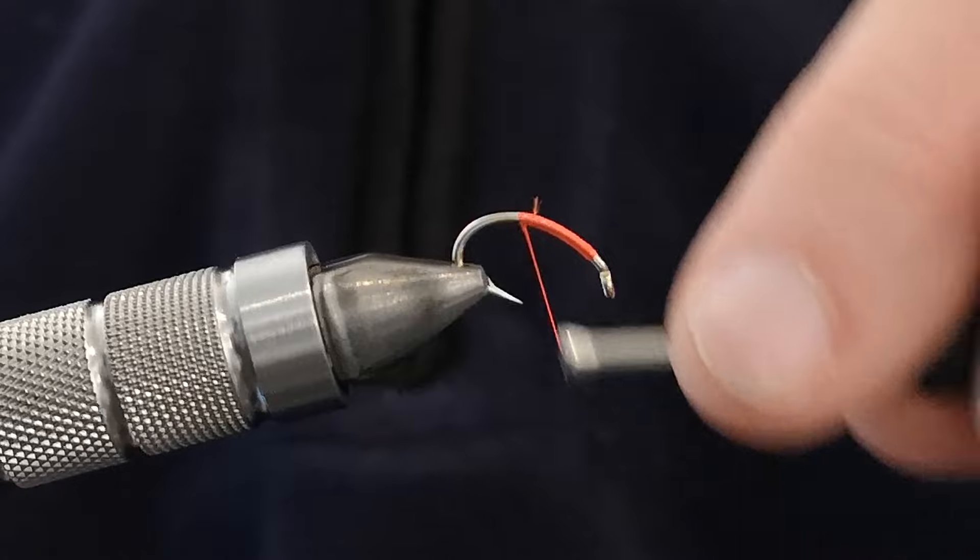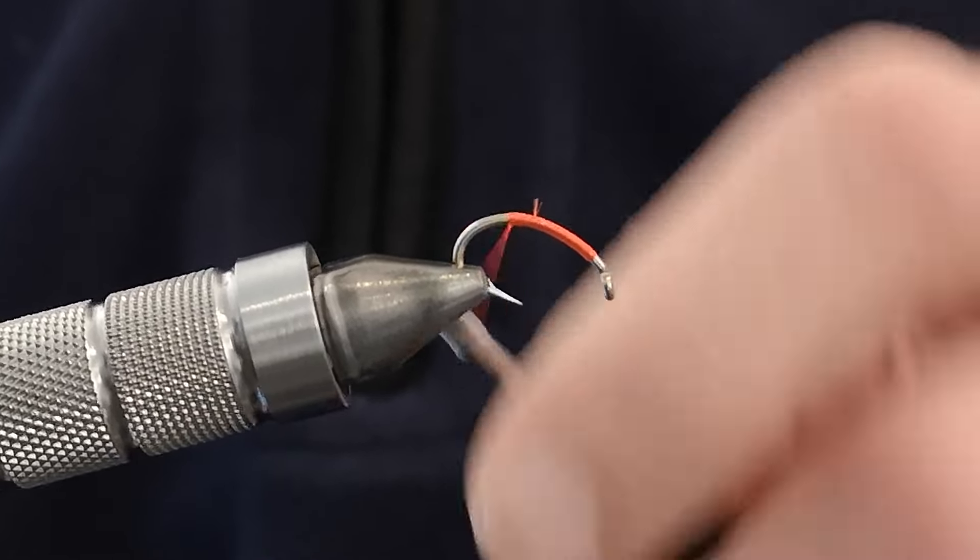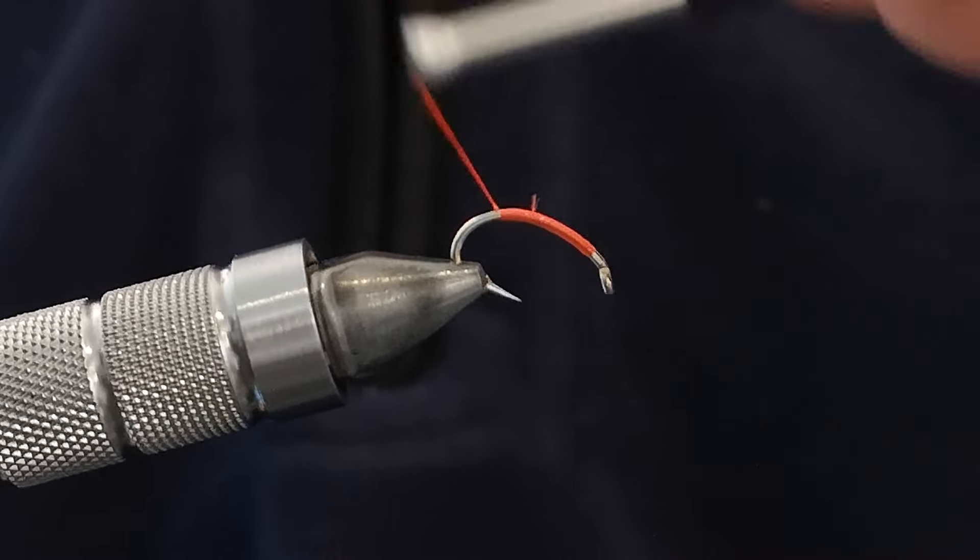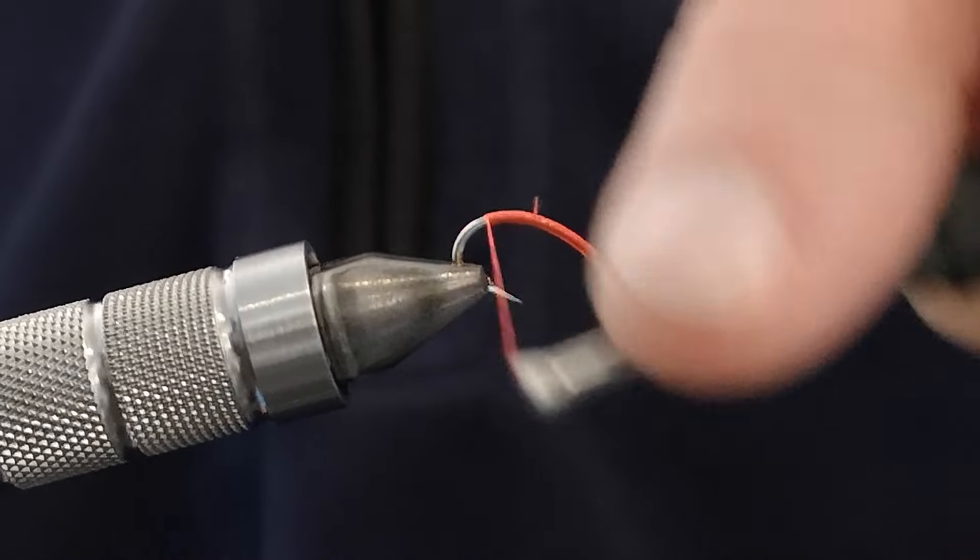Try and make the turns as neat as possible, as close as possible. If you leave a bit of a gap it doesn't matter too much because you won't see any of this thread through the plumber's tape. As I say the thread is only for the thorax.